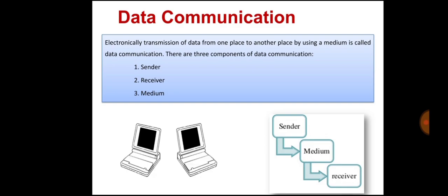The third component is the medium. It is a channel or physical path through which the message is carried from sender to the receiver. The medium can be wired, like twisted pair wire, coaxial cable, fiber optic cable, or wireless, like laser, radio waves, and microwaves.